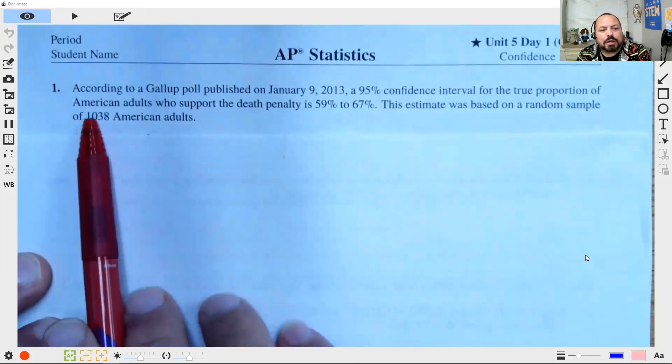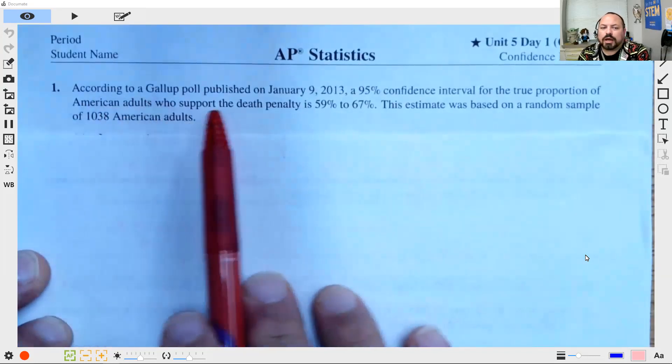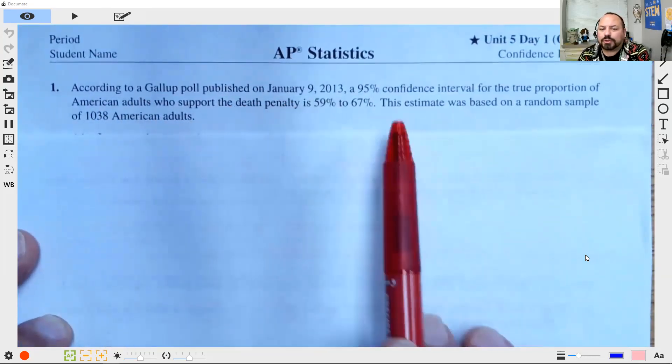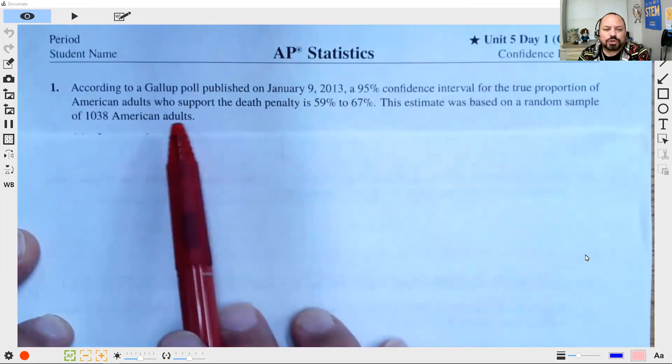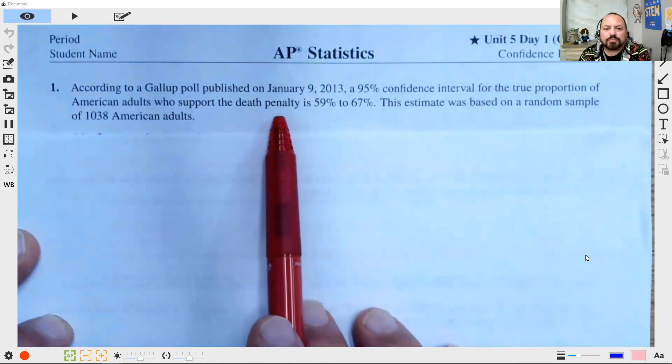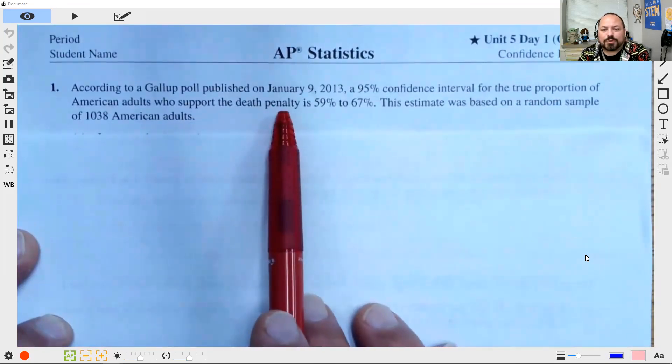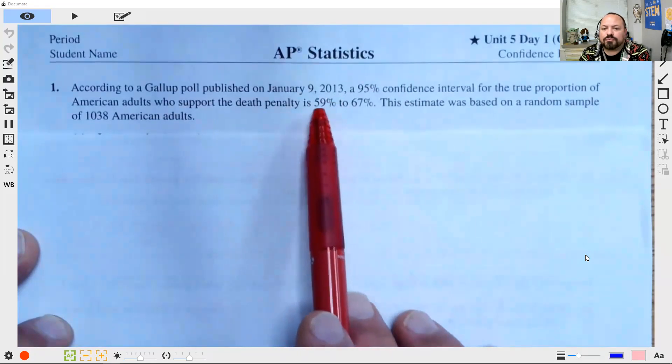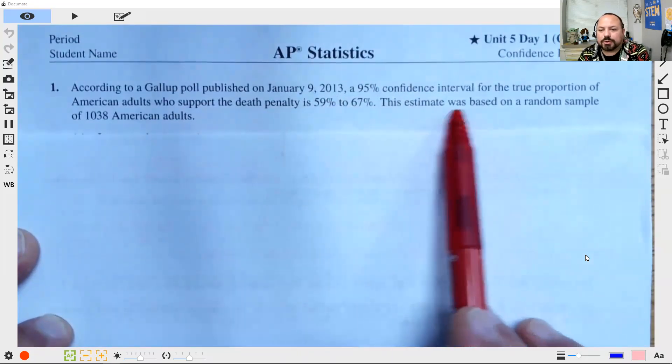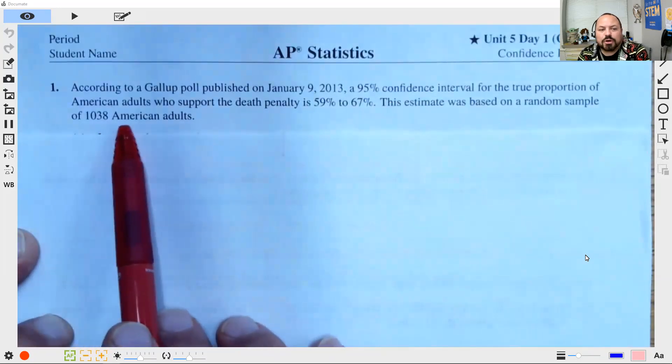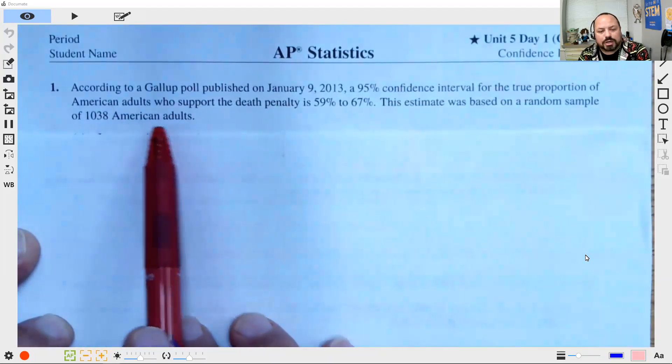So in our first setup, we have a Gallup poll that has a 95% confidence interval for the true proportion of American adults who support the death penalty. And that 95% confidence interval is from 59% to 67%. This estimate was based on a random sample of 1,038 American adults.